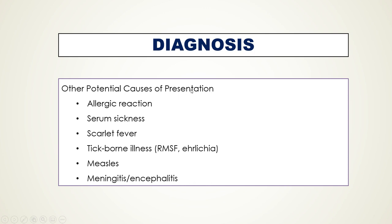There are other potential causes to think about when patients present this way. These include a systemic allergic reaction, serum sickness from antibody use such as horse antibodies for antivenoms or from amoxicillin, scarlet fever — which can create many of these symptoms including peeling of the hands and feet afterwards — tick-borne illnesses such as Rocky Mountain Spotted Fever or Ehrlichia, measles, which has the classic finding of conjunctivitis followed by a head-to-foot rash, and meningitis or encephalitis.